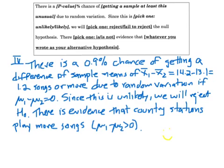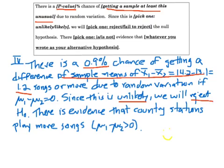And then I put this paragraph up here. It's the same paragraph we've written before. It's exactly the same thing now. There is a 0.9% chance of getting a difference of sample means of X bar 1 minus X bar 2 or more due to random variation if mu 1 minus mu 2 equals 0. Since this is unlikely, we will reject the null hypothesis. And then we do it in English. There is evidence that the country stations play more songs than rock stations. Paragraph's exactly the same. You'll get a lot of practice with it in class. I know it's a little bit foreign now, but trust me, you'll get a lot of practice with it.